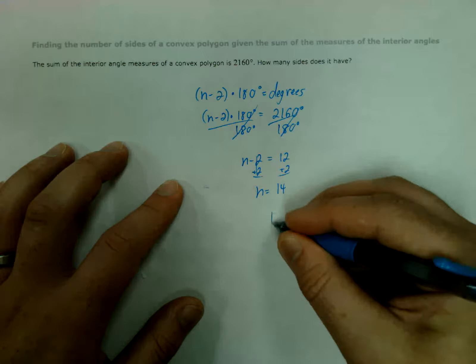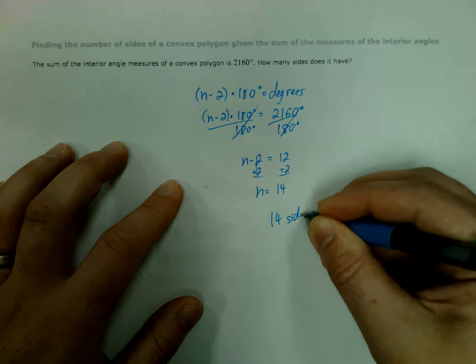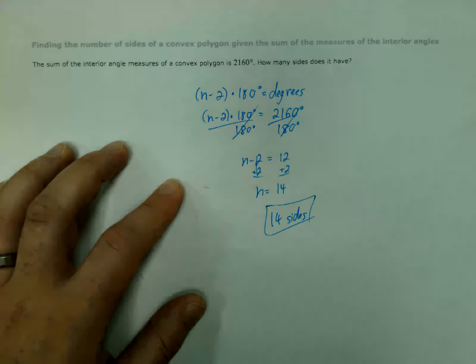And we find out that we have 14 sides. So our answer would just be 14 sides. Didn't ask for the name of it, just the number of sides. So we'll leave it right there.